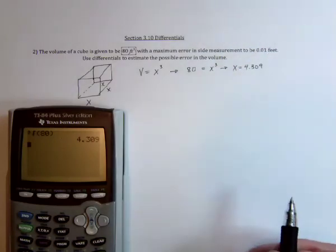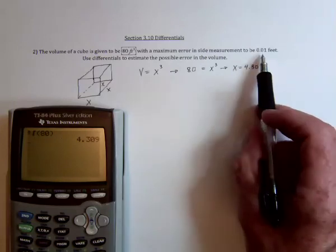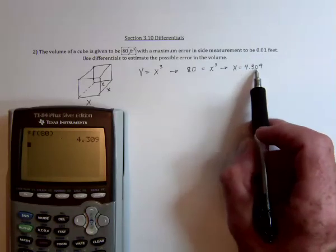But because a human being did the measurements and we're not real precise, it could be off by as much as 0.01 feet. So 0.01. So this could be a 319 or it could be a 299.